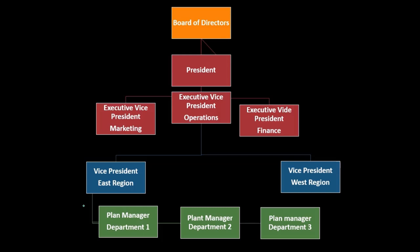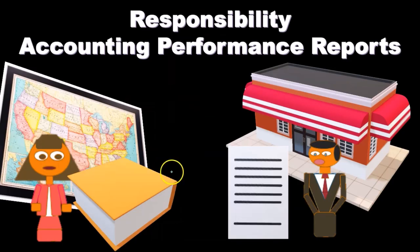The amount of controllable costs increases as we go up the chain. If we imagine this situation, we have a report at the store level — a very detailed report of the controllable costs of the store.